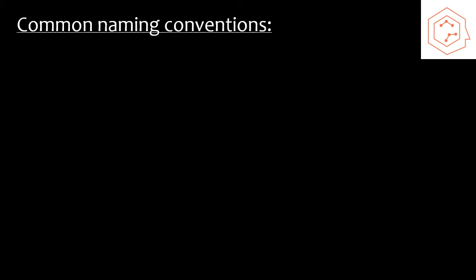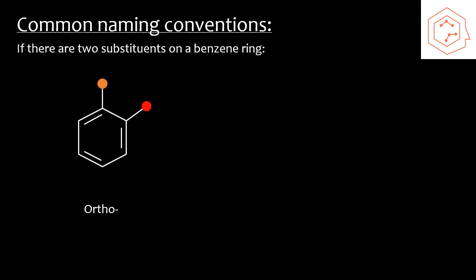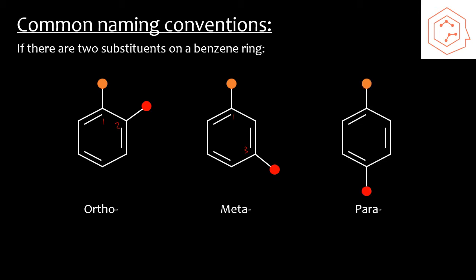When naming benzene rings, we can use naming conventions that describe where two substituent groups are on the ring relative to each other. The ortho prefix is used to describe two groups that are right beside each other at the carbon one and carbon two position. The meta prefix is used to describe two groups that are one carbon apart, at the carbon one and carbon three position. Finally, the para prefix is used to describe two substituent groups that are two carbons apart, at carbon one and carbon four.